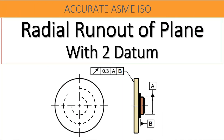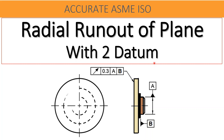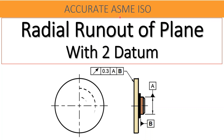Hello friends, welcome to our YouTube learning channel Accurate ASME ISO. In this video, an advanced measurement of GD&T will be discussed — what is radial run out of planar surfaces with respect to two datums? The explanation given here is very simple and step by step, for the purpose of datum and measurement. Please do not forget to subscribe the channel and share with others. Let us begin now.